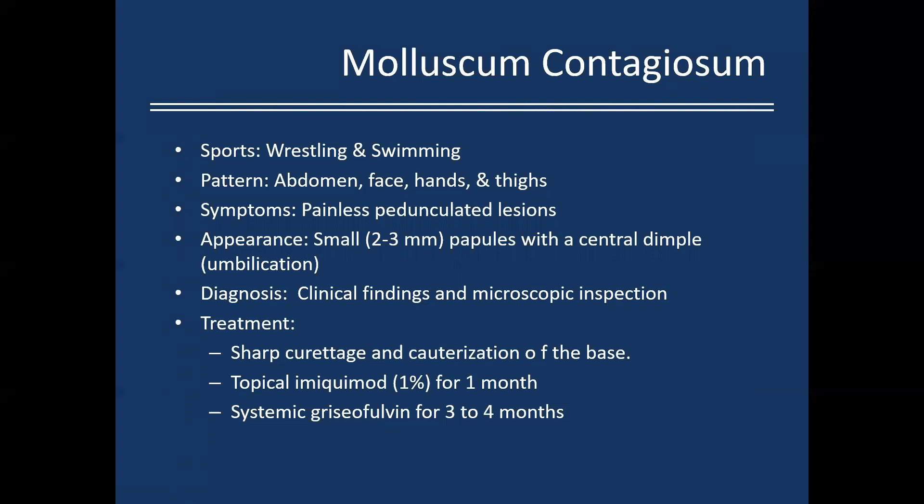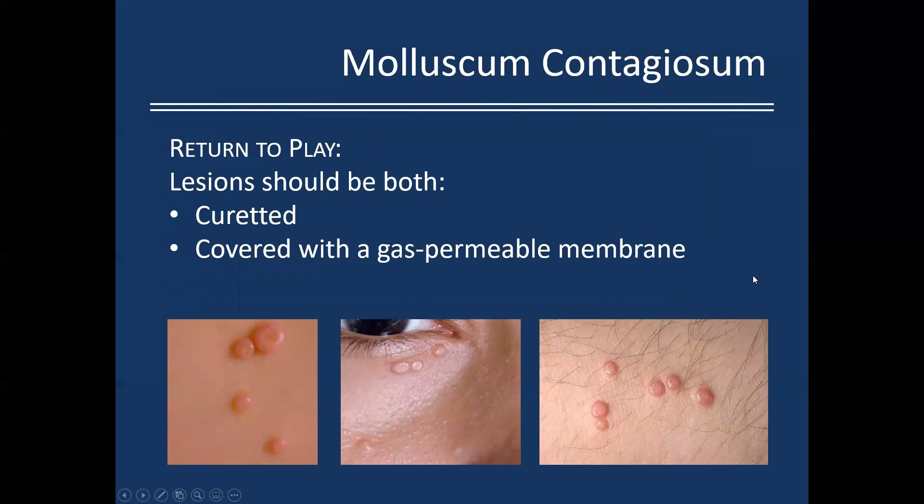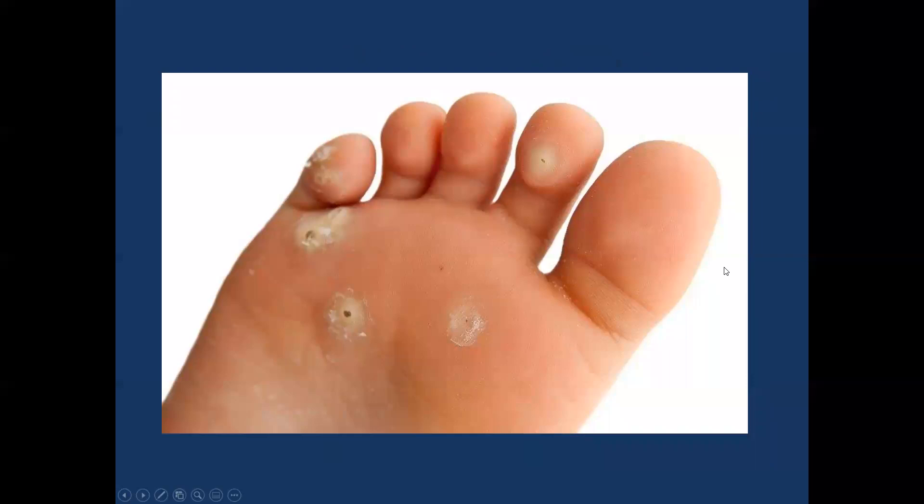Diagnosis is typically clinical, though lab confirmation is available. For treatment, sharp curettage and cauterization of the base is considered curative. You can also use topical imiquimod for a month or systemic griseofulvin for three to four months. Given the athletic population, I typically recommend curettage as it requires the least adherence. For return to play: cure the lesions or cover them with a gas-permeable membrane.